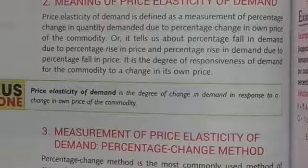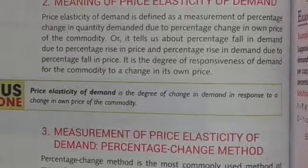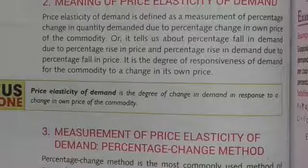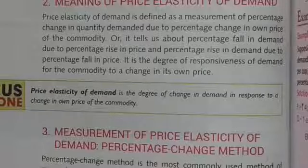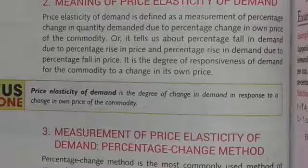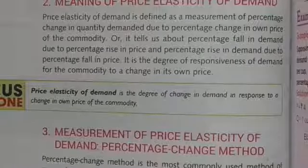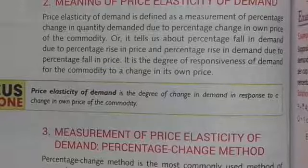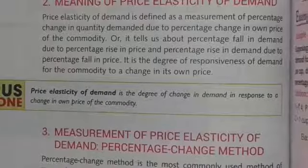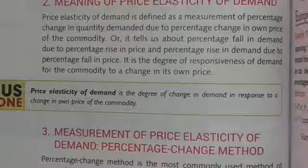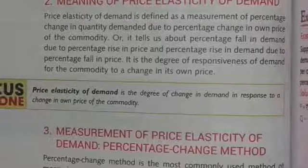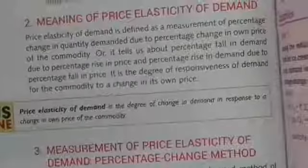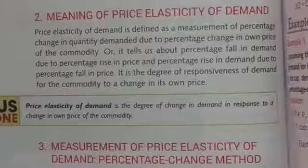We measure it with percentage — percentage change in demand and percentage change in price. That may be positive or negative. If demand is going up, it will be called positive; if it is going down, it will be called negative. The measurement method is called the percentage change method, because generally we measure it in percentage, which gives us an exact scenario. We will study about the percentage change method in the next video.